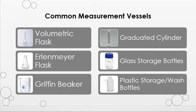Moving on to measurement containers — these are the more common vessels you will see in the laboratory. The volumetric flask is calibrated to measure one volume, and along with the graduated cylinder, it is one of the more accurate measuring devices. The Erlenmeyer flask and Griffin beaker are not as accurate and should only be used when accuracy is not critical. Glass and plastic storage or wash bottles can store and measure liquids as well. The National Institute of Standards and Technology, or NIST, is responsible for standardizing all these measurement devices, and they also standardize time.